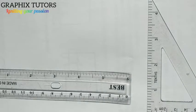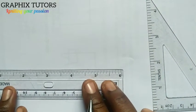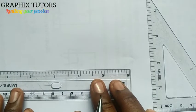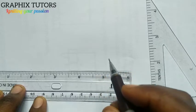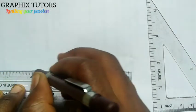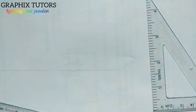Good everyone, my name is Graphics. Today we want to construct angle 52 and a half degrees. The first thing you do when you want to construct is to draw your horizontal line with the help of your T-square. You place your T-square and draw your horizontal line first.